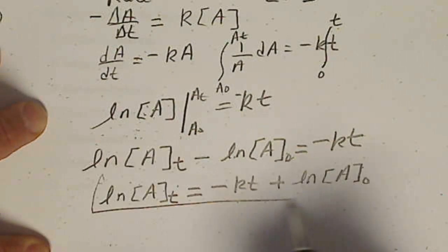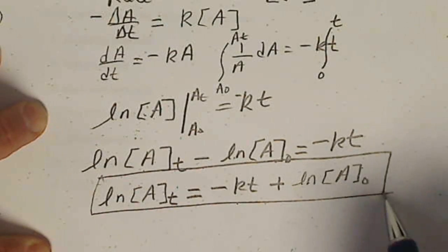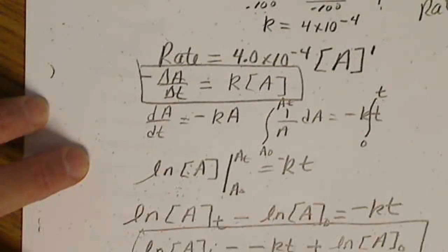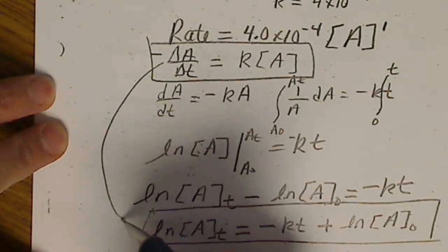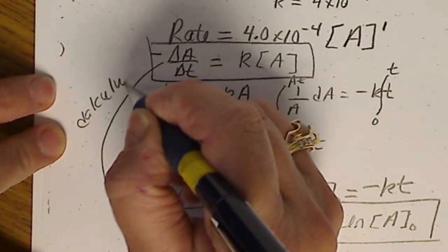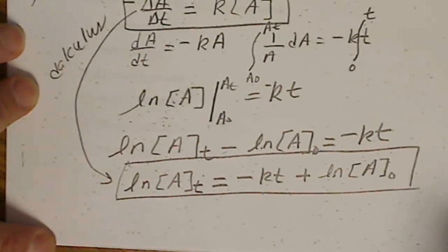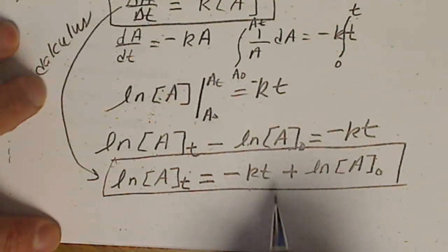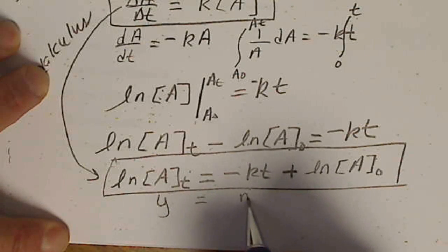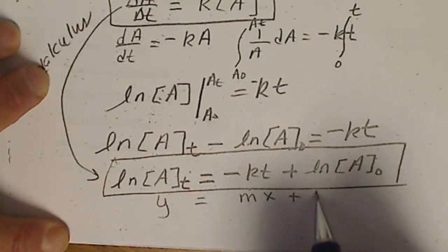So the ln of A at any time is equal to negative K T plus the natural log of the initial concentration. So this equation does not look anything like this equation here. But those are the same thing. This is just a matter of doing some calculus, which I didn't really do all of that. And this is a linear equation.